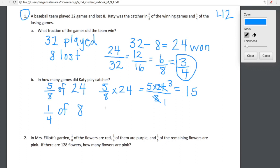Okay cool, so we'll hang out there for a second. 15. Now we look for 1 fourth of 8. Well, 1 fourth of 8 looks like 1 fourth times 8. This one looks really easy. We have 1 times 8 on the top, we have 4 on the bottom. 1 times 8 is 8 over 4. 8 divided by 4 is 2. So in how many games did Katie play catcher? 15 plus 2 is 17.